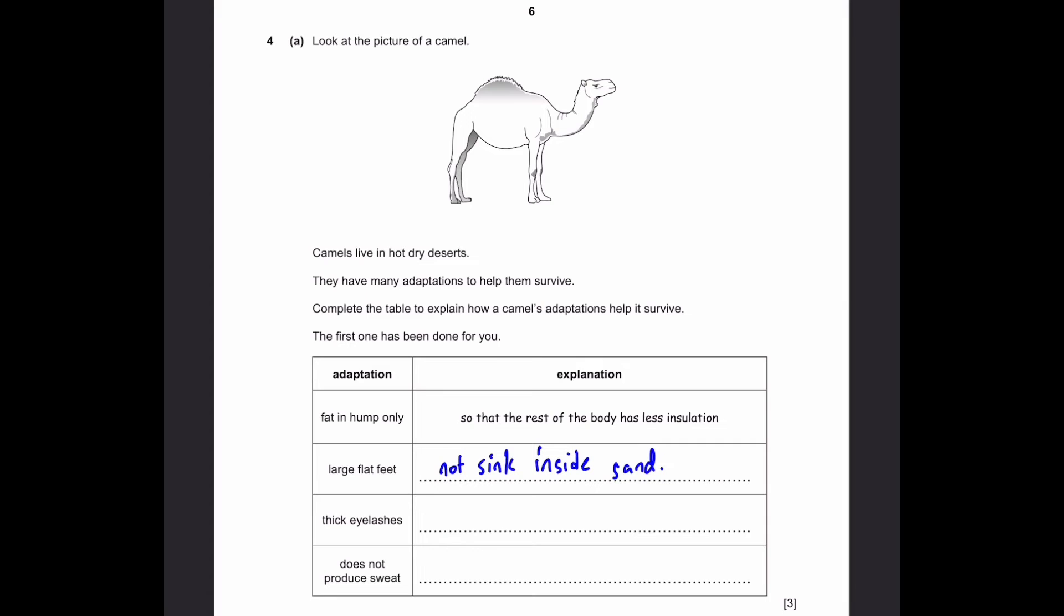Now thick eyelashes. There's a lot of chances for sandstorms in deserts. And because of this, camels have thick eyelashes. But what is the relation between these? It's because sandstorms can cover the eyes. So thick eyelashes help so that sand does not reach the eyes.